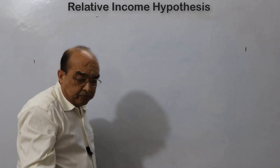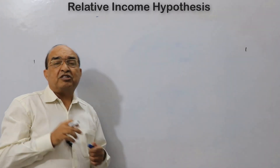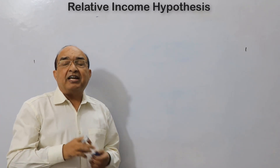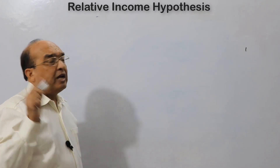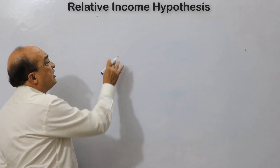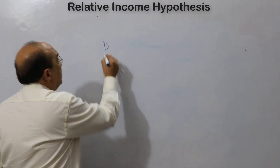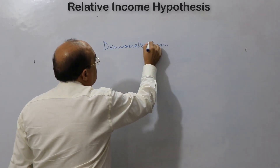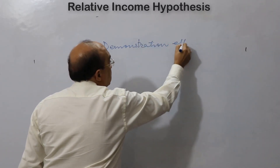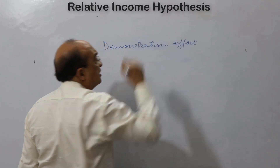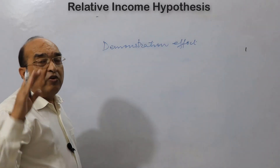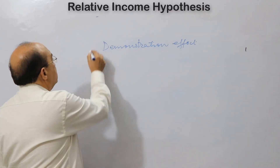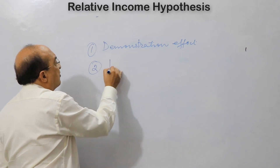We can explain the consumption function under the relative income hypothesis with the help of a graph. There are two types of effects. One is the demonstration effect — whatever one observes, one gets influenced by it. The second is the ratchet effect.